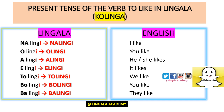Now let's look at the present tense of 'kolinga' (to like). 'Nalingi' means I like. 'Olingi' means you like. 'Alingi' means he or she likes. 'Elingi' means it likes. 'Tolingi' means we like. 'Bolingi' means you (plural) like. 'Balingi' means they like. Note that 'kolinga' means both to like and to love — it's the same verb.